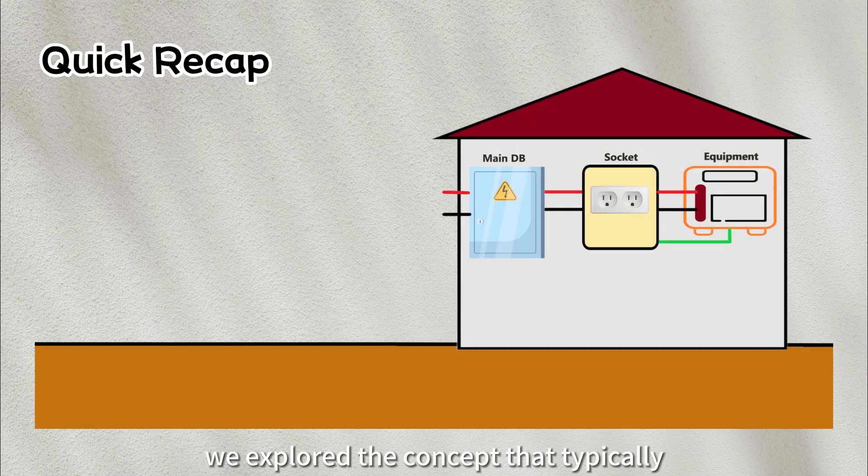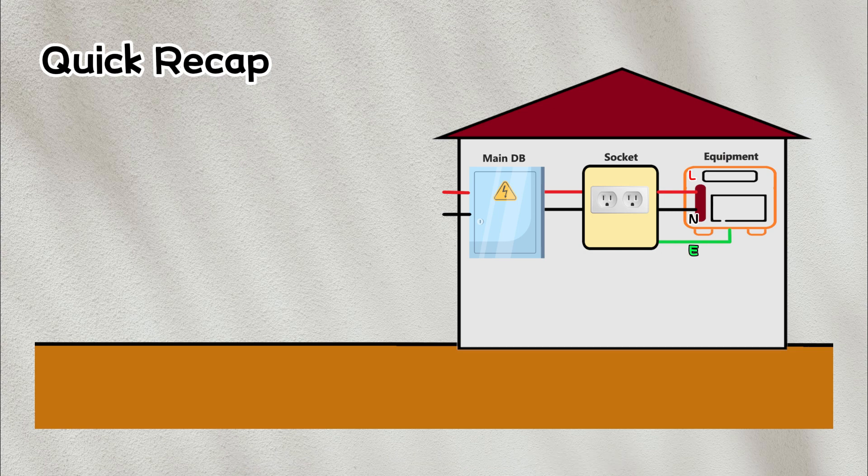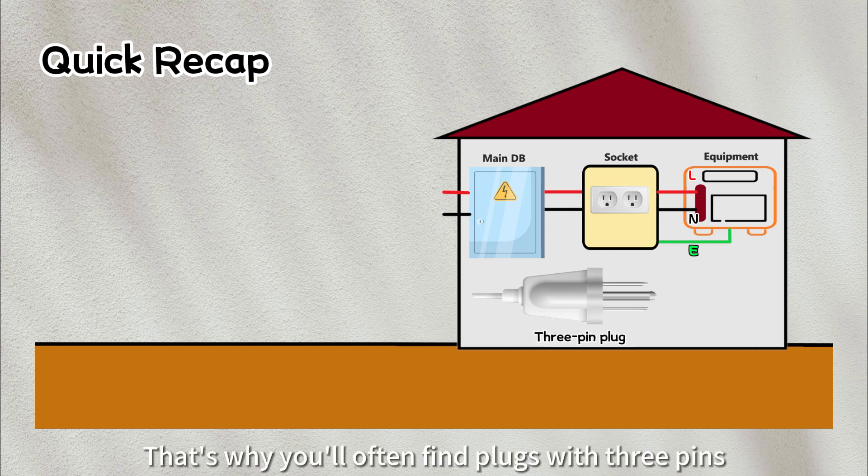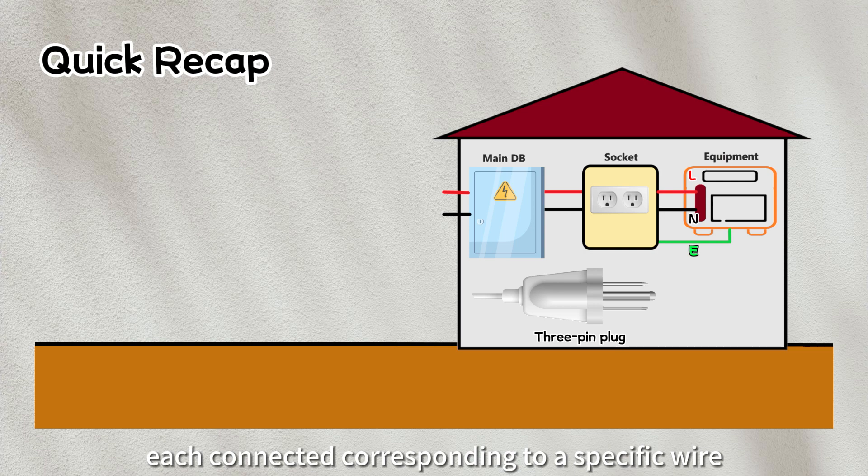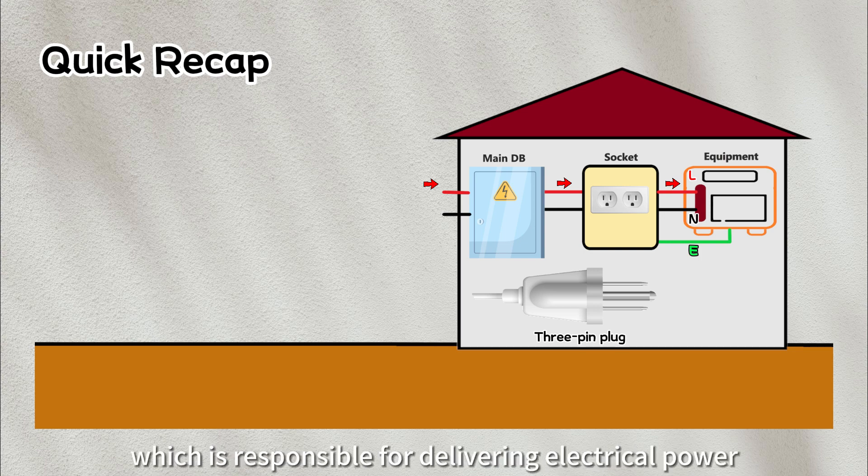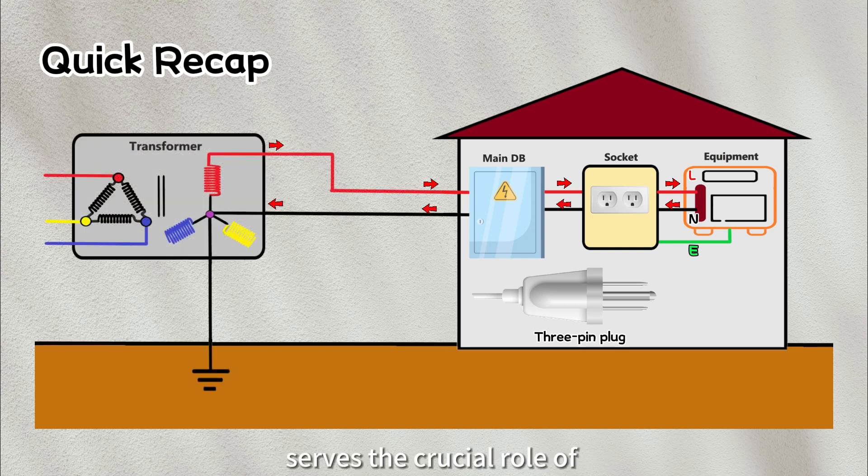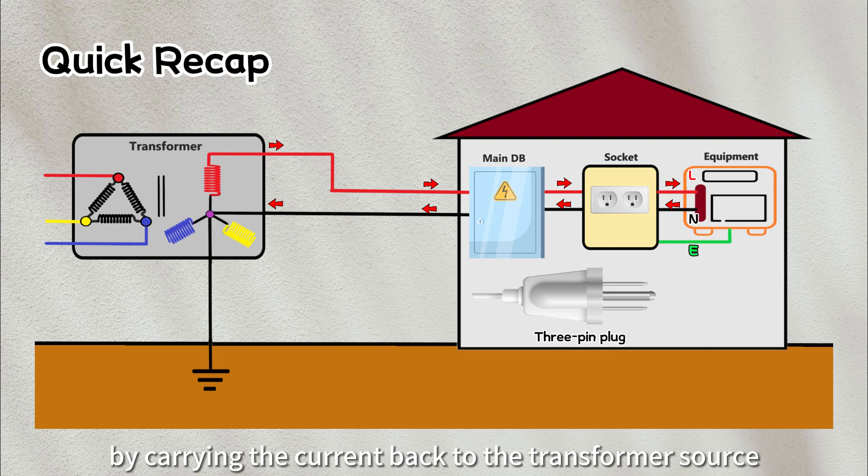In our previous video, we explored the concept that typically three wires are connected to single-phase electrical equipment. That's why you'll often find plugs with three pins, each corresponding to a specific wire. Let us quickly recall the content. Firstly, we have the hot wire, which is responsible for delivering electrical power to our devices. Secondly, the neutral wire serves the crucial role of completing the entire circuit by carrying the current back to the transformer source.